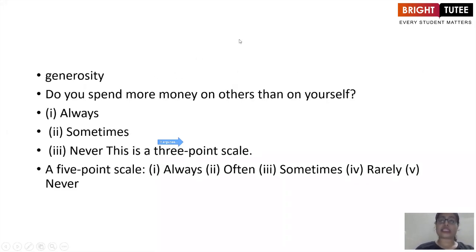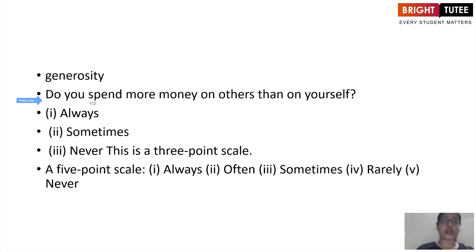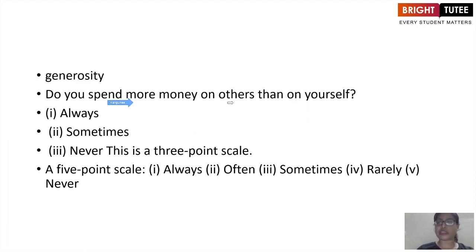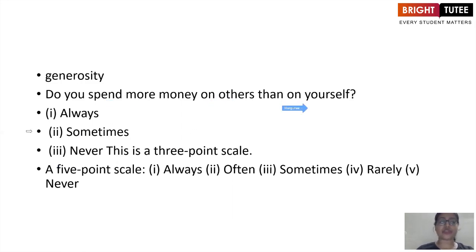Let's say you have to assess generosity in a person. The question might be: 'Do you spend more money on others than on yourself?' On a three-point scale, the options may be: always, sometimes, and never. A five-point scale may have options such as always, often, sometimes, rarely, and never.